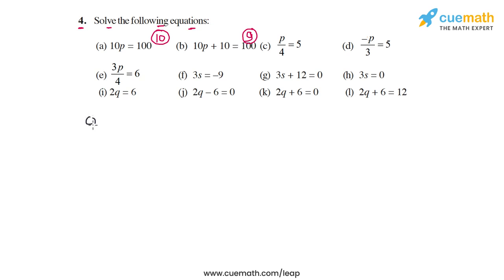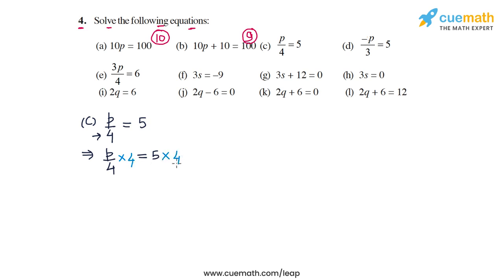In part c the equation is p by 4 equal to 5. We have a 4 in the denominator on the LHS, so to get rid of it we multiply by 4 on both sides. On the LHS the 4s cancel out and on the RHS 5 into 4 is 20, so we obtain p equal to 20. The solution in part c is p equal to 20.